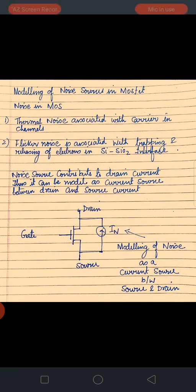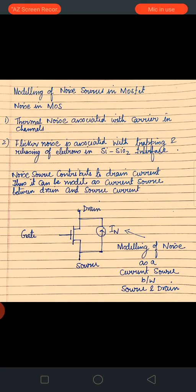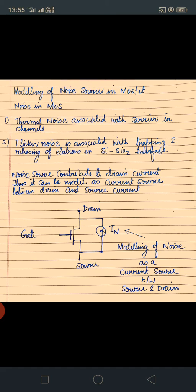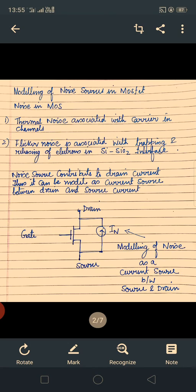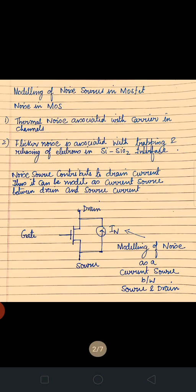Now, what basically is noise? Noise is a type of unwanted signal that attenuates or reduces the strength of a signal. In the MOSFET, the device is also affected by noise. There are two types of noise in the circuit that affect the MOSFET: thermal noise and flicker noise.